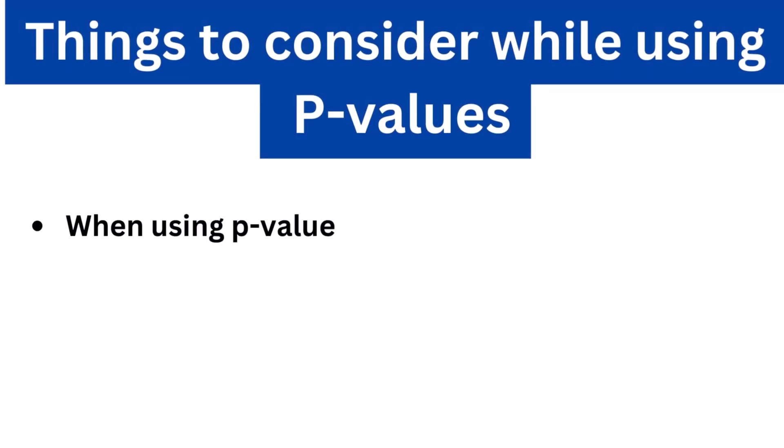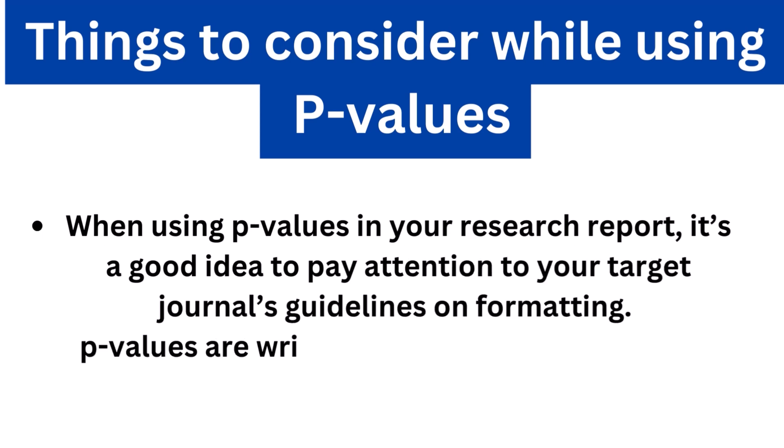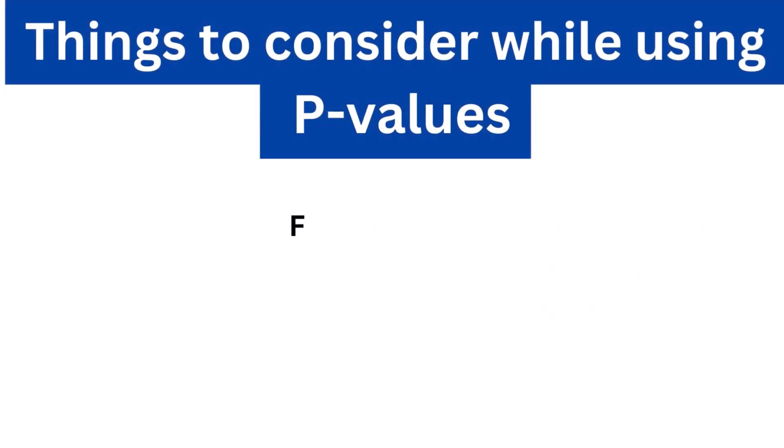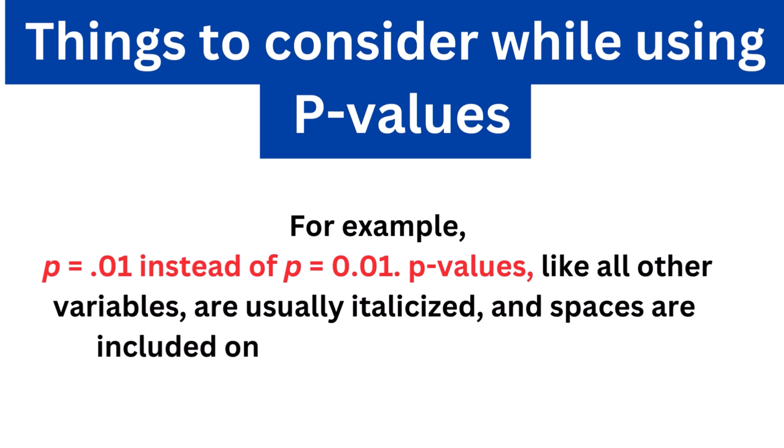When using p-values in your research report, it's a good idea to pay attention to your target journal's guidelines on formatting. Typically, p-values are written without a leading zero. For example, write p equals 0.01 instead of p equals 0.01. Also, p-values, like all other variables, are usually italicized, and spaces are included on both sides of the equal sign.